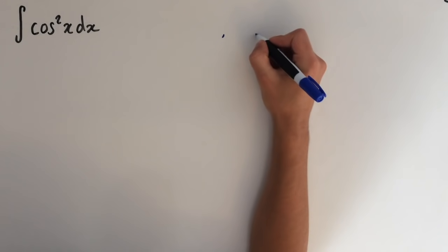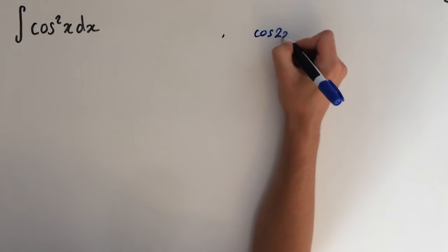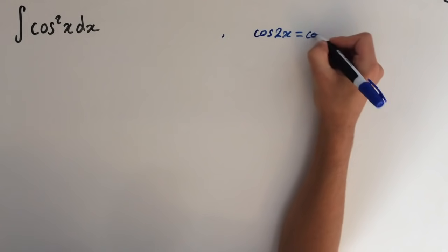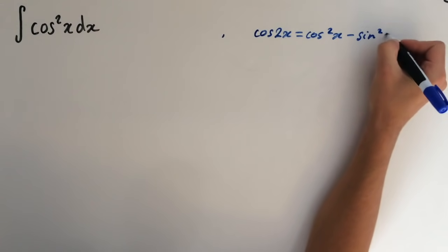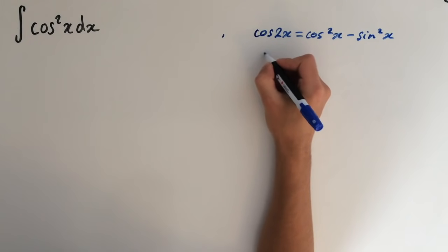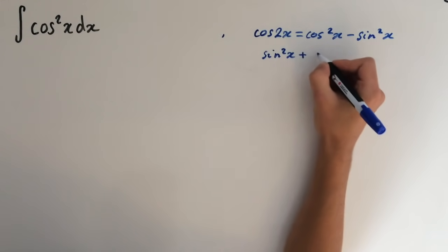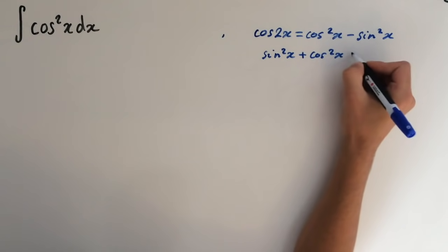So what we do first is we look at the addition formula for cosine of 2x. And this equals cosine squared of x minus sine squared of x. And we also know the identity sine squared of x plus cosine squared of x equals 1.